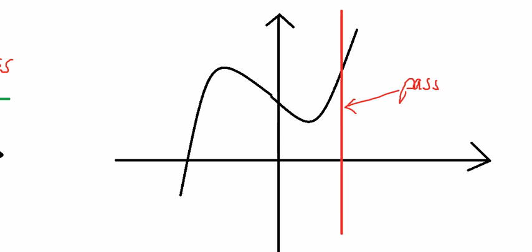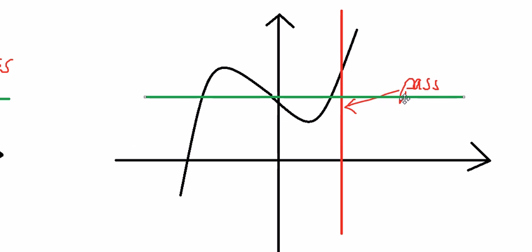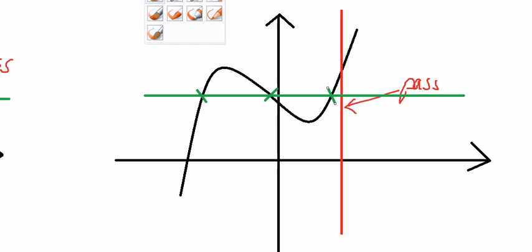Now I go to the horizontal line. I move it from here to this point, and you can see that we have three intersections — here, here, and here. So it means fail, because there are more than one intersection.